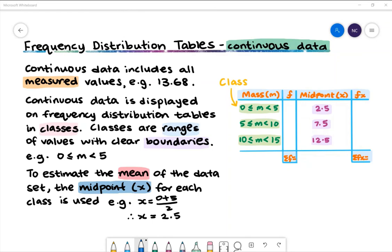In our diagram on the right, we have a frequency table with the headings mass, frequency, midpoint and fx. We have three classes shown in the first column. In the third column, we have the midpoint of each class displayed.